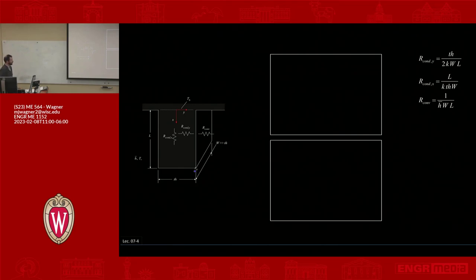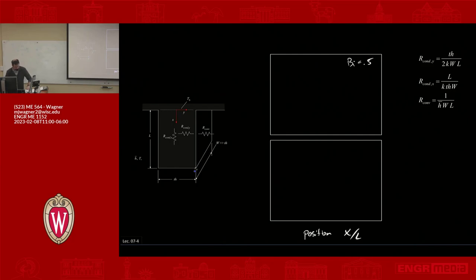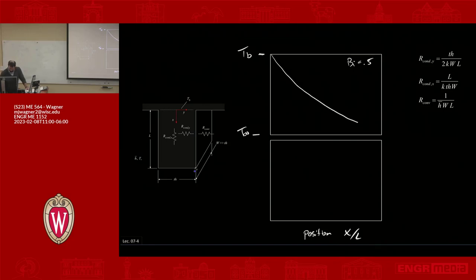I want to think about the temperature profiles and what it means to model this as a 1D problem — because if you get this, the rest really makes sense. Let's plot what happens with a Biot number of 0.5, which is not a case where we could really make the 1D assumption. Plotting temperature from T_B down to T_∞ as a function of position x/L, first at the centerline and then at the outer surface of the fin.